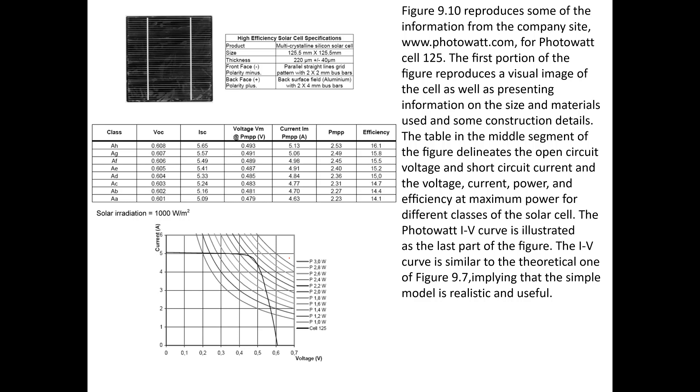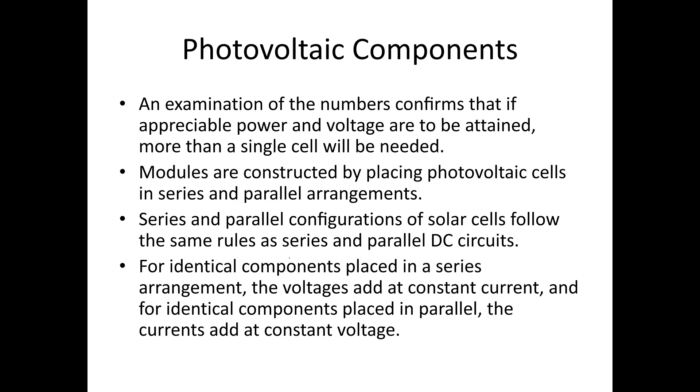So, an examination of the numbers confirms that to achieve appreciable power and voltage, more than a single solar cell will be needed. So again, modules, as I discussed earlier, are constructed by placing photovoltaic cells in series and parallel arrangements. Series and parallel configurations of solar cells follow the same rules of series and parallel DC circuits.